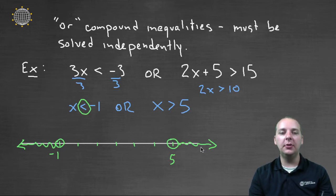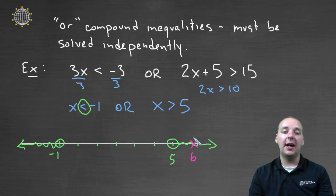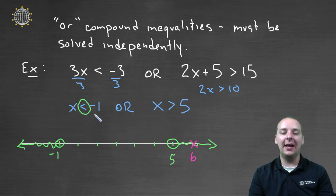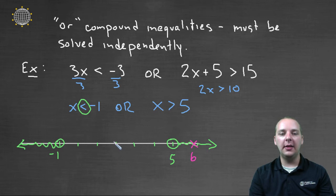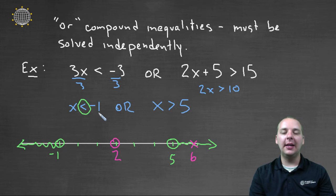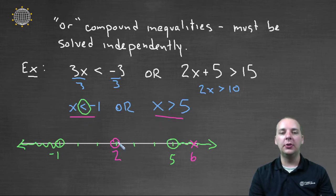Anybody in the shaded region would make this statement true. Let's try the point six. Six is less than negative one — no. Or six is greater than five — yes. So the OR statement is true. Now if you tried somebody in the middle, like at two: two is less than negative one — no. Or two is greater than five — no. Because it doesn't make either of the inequalities true, it would not be a solution to the compound inequality.